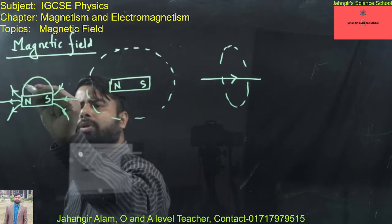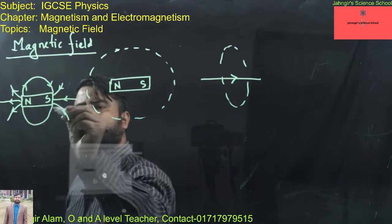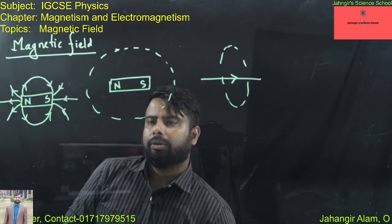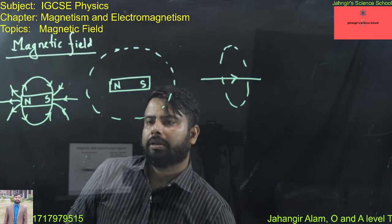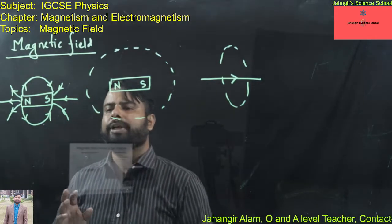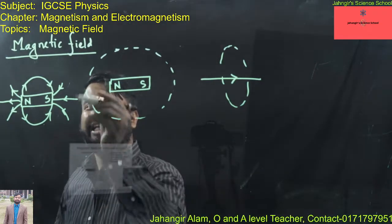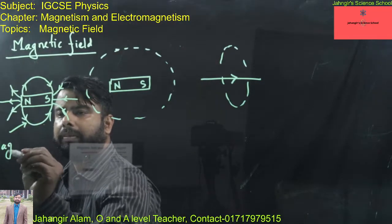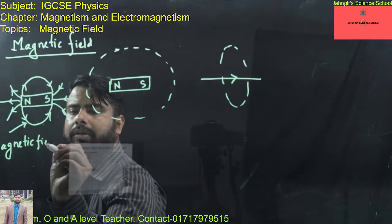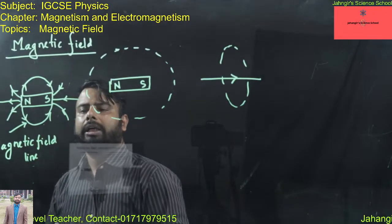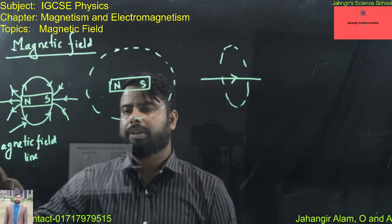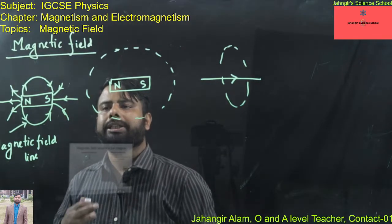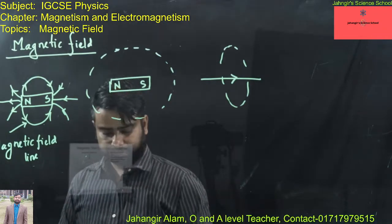Magnetic field lines start from the North Pole and end at the South Pole. The arrows on the field lines represent the direction of the force on a free north pole. The direction of the arrows on the field lines shows the direction of the magnetic field.